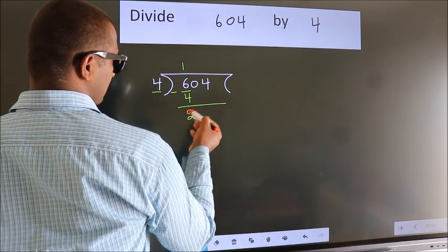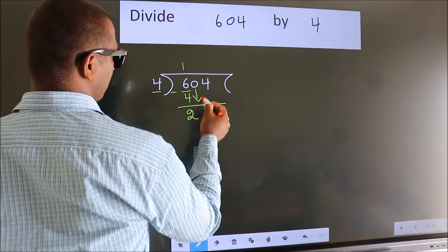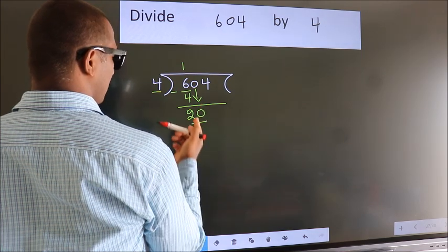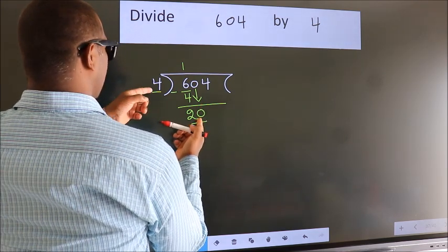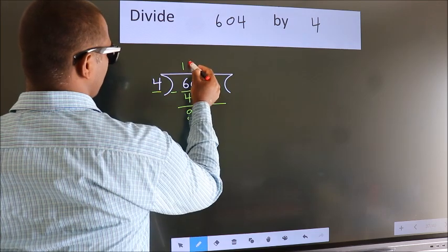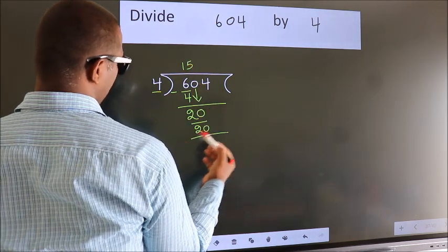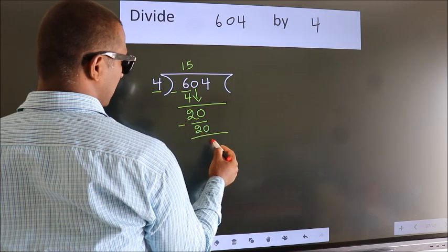After this, bring down the beside number. So, 0 down. So, 20. When do we get 20 in 4 table? 4 fives, 20. Now we subtract. We get 0.